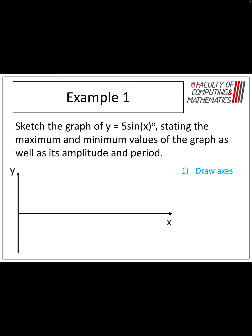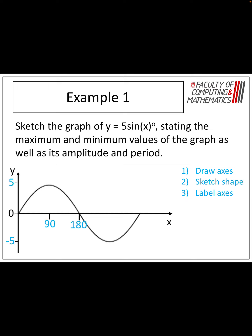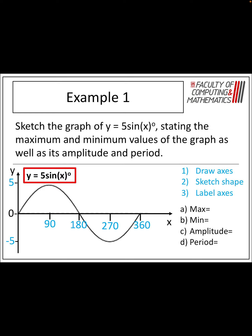We'll draw the axis first of all, then sketch the shape — because it is just a sketch, it doesn't have to be perfect. Then we'll put in 0, 90, 180, 270, and 360 on the x-axis, as those are our key points on these graphs. And then we'll put in 5 and negative 5 for our y-axis. So the maximum value is 5, the minimum value is negative 5, the amplitude is 5, and our period stays the same at 360.